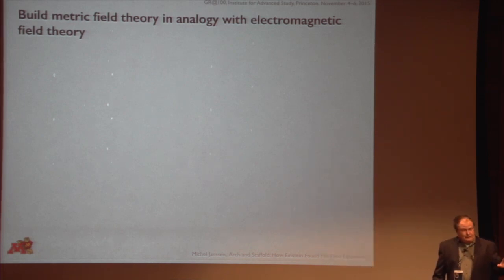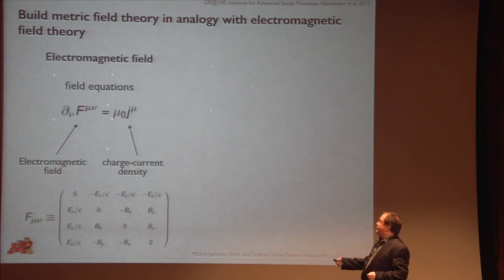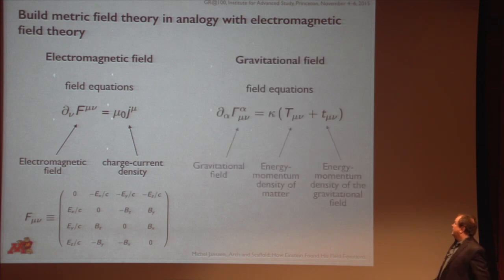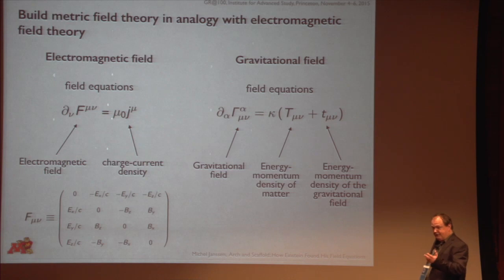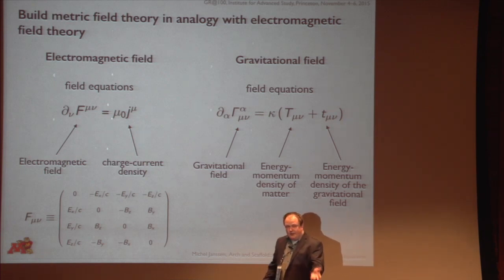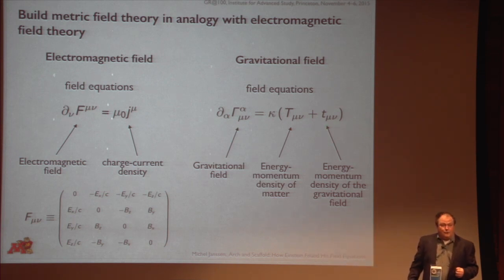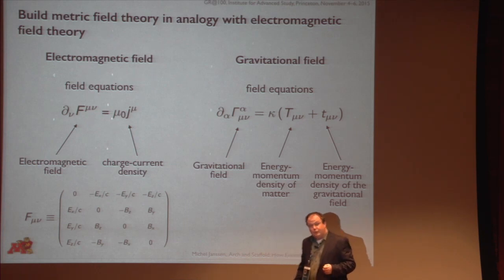He's going to build this metric field theory in analogy with electromagnetic field theory. You start with the field equations: it's the divergence of the electromagnetic field tensor equal to the source — the charge-current density. The gestalt is the same: you take the divergence of something representing the gravitational field, and you set it equal to the source, except that in this case — because E equals mc squared — anything with energy is going to generate the gravitational field. So you also have to represent the energy-momentum of the gravitational field itself — what is now known as the gravitational energy-momentum pseudotensor.